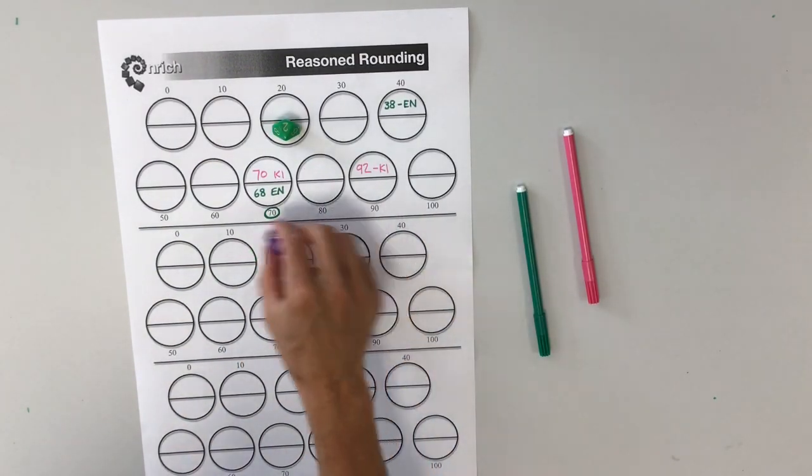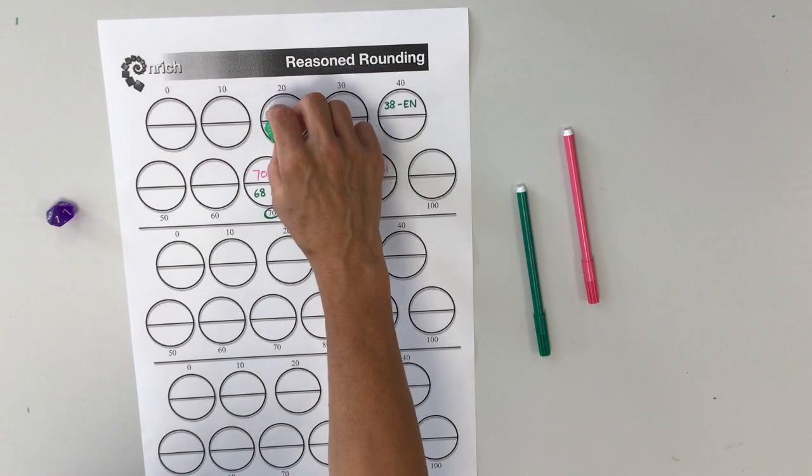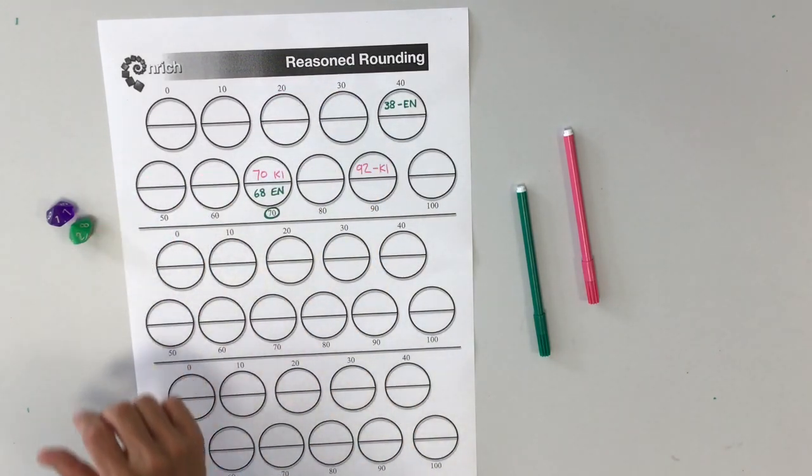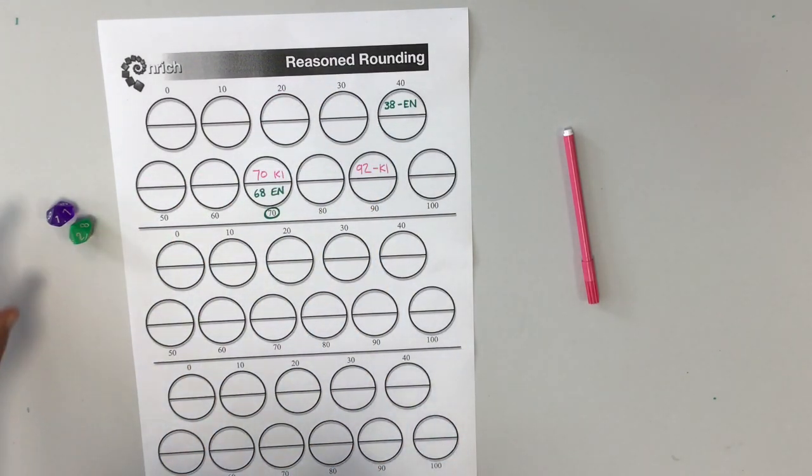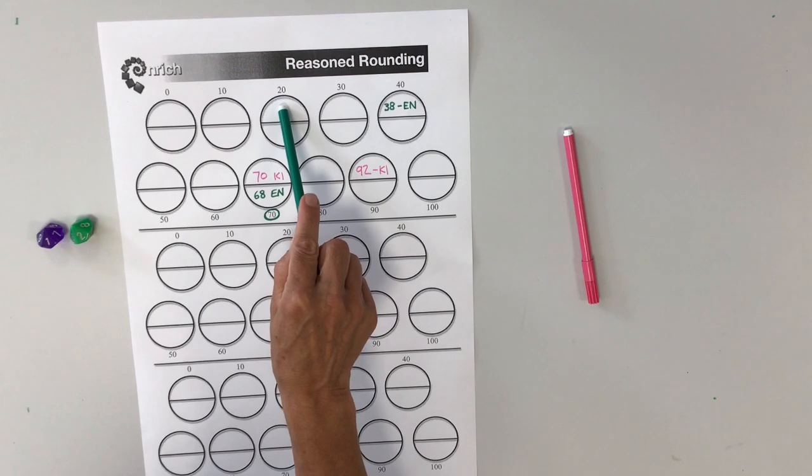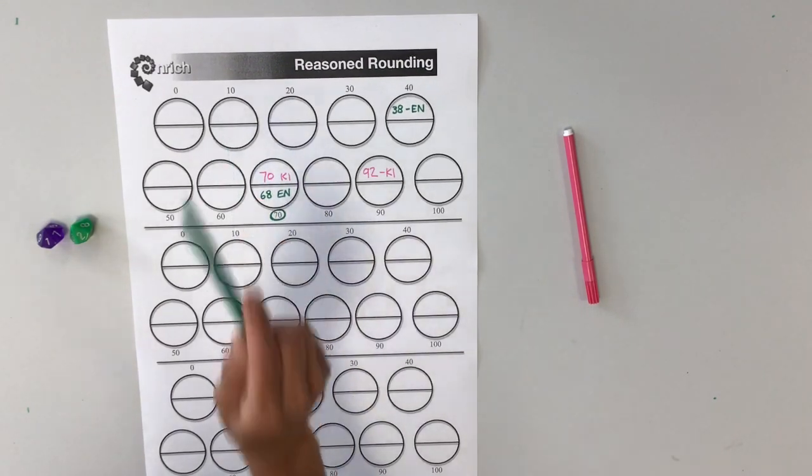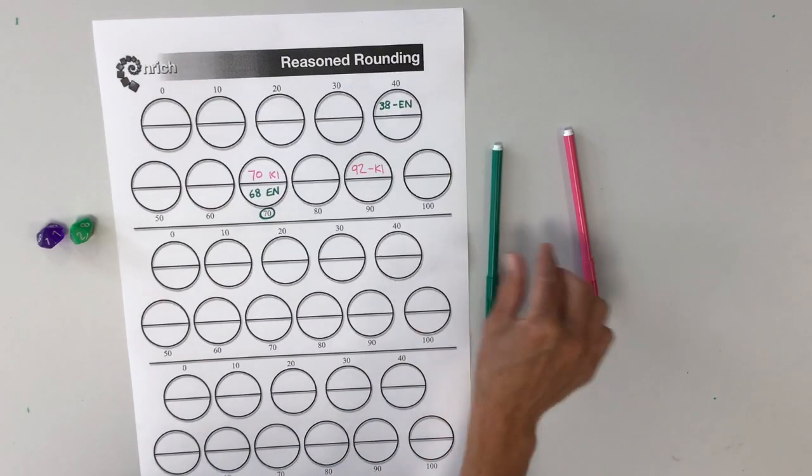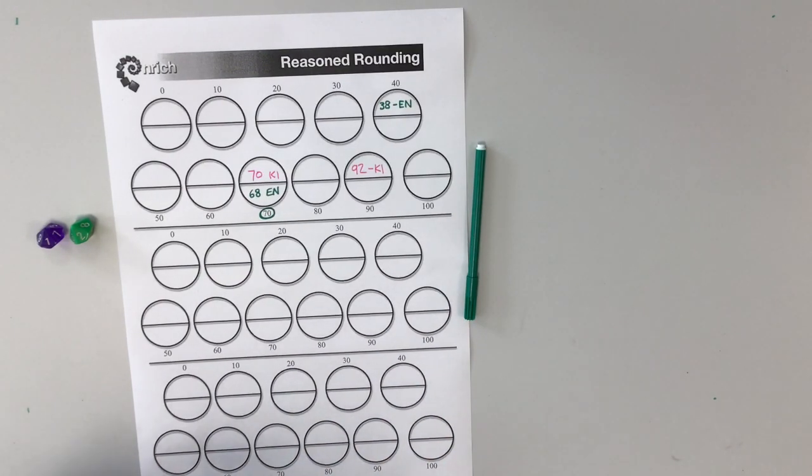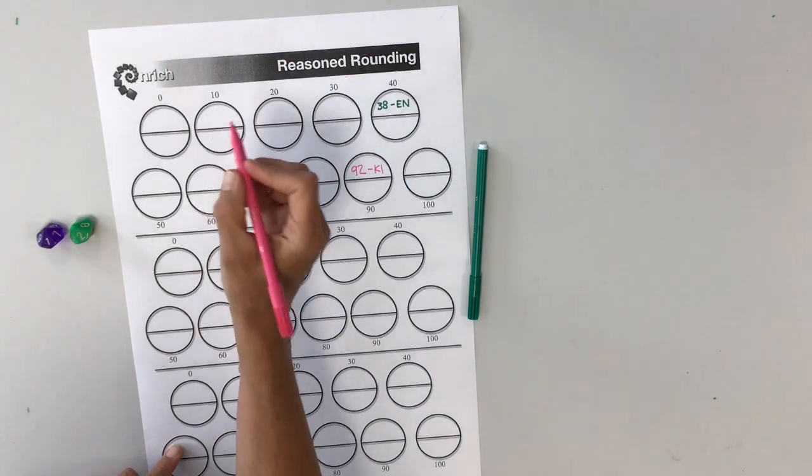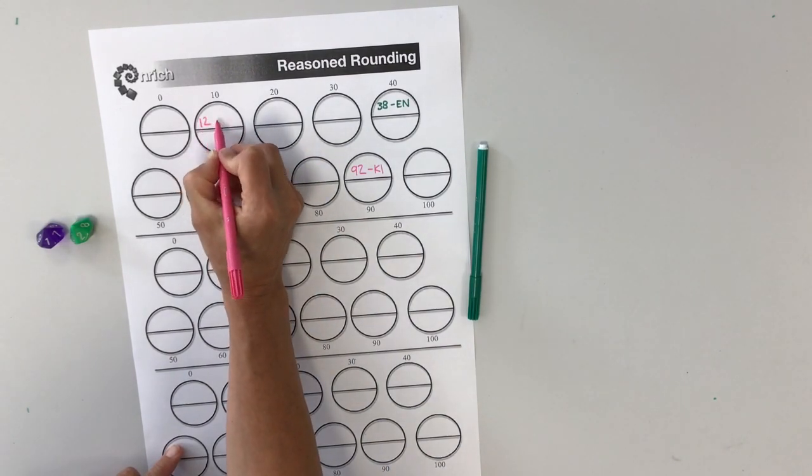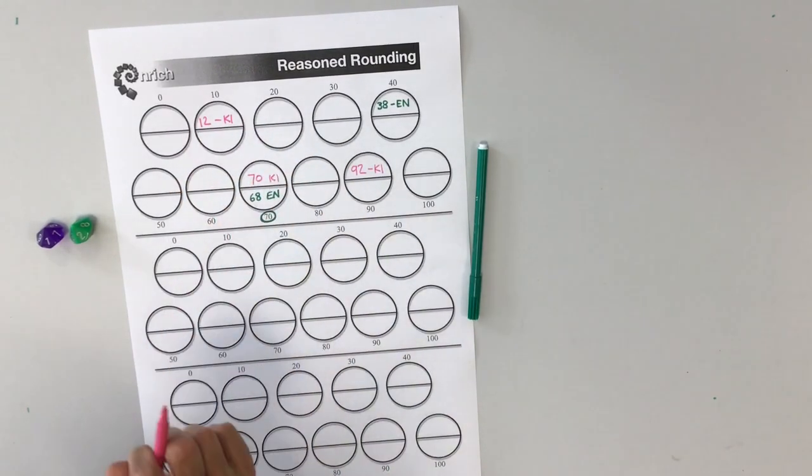So my go. I have got here a 2 and a 1. So I can have 21 or 12. So if I round 21 down, that would give me this part of this circle. Or if I have 12, I would be rounding down to 10, which would give me this part of this circle. So I'm going to have 12 and mark there.